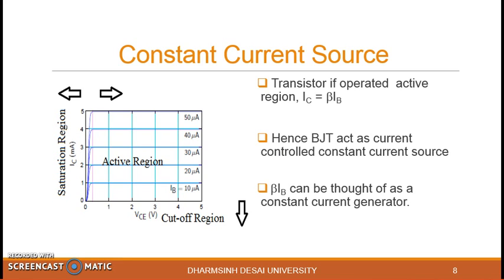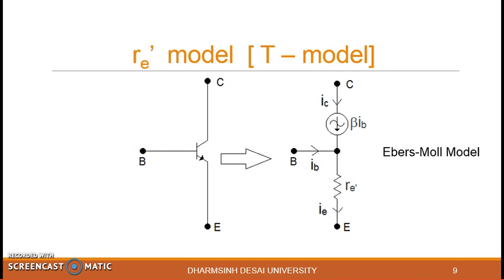So the model now looks like this. See the resistance RE dash indicating the forward bias diode but this resistance changes inversely proportional to capital IE and it is acting as a constant current source. This is basically developed from the Ebersmol model. This looks like a T that's why it is also known as T model or RE dash model.